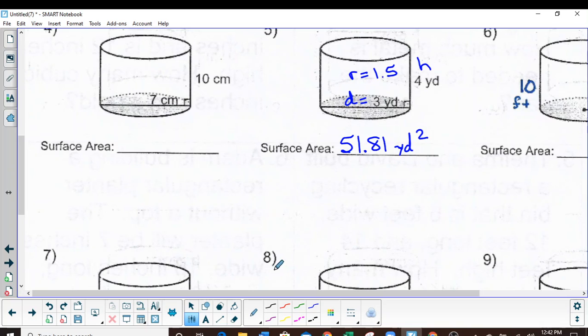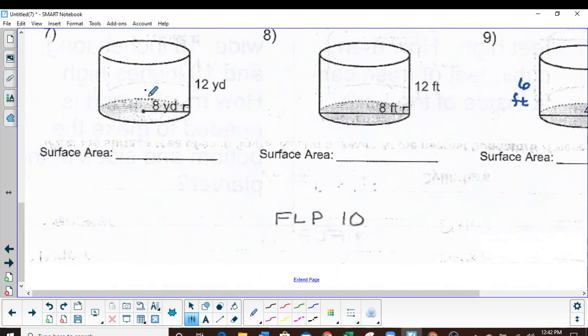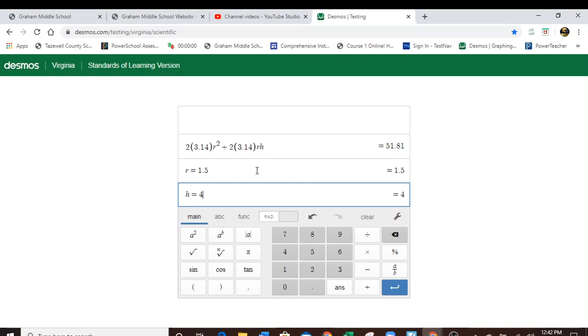Cool, that saved us a little time. All right, there's seven. This time I already have a radius, which is great, and there's my h. All I gotta do is pop those in Desmos. Radius of eight, height of 12.